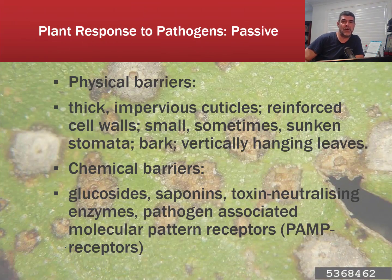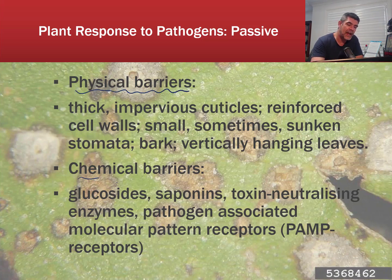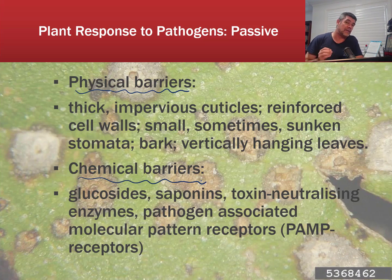The first thing we need to do is have a quick look at plant responses to pathogens. Plant responses to pathogens come in two main forms: passive or active. In terms of passive approaches, there are two subcategories: physical barriers and chemical barriers. When we're studying fungal diseases, we want to look at how pathogens overcome these passive and active responses of the plant in order to establish themselves and take hold.